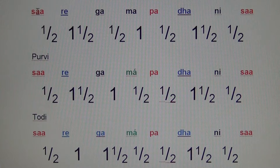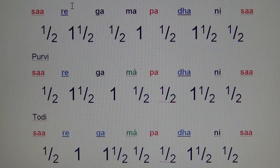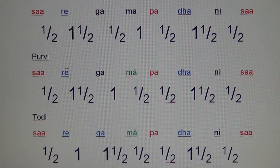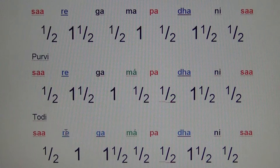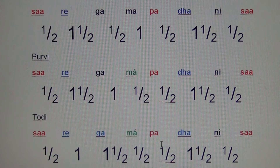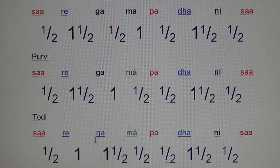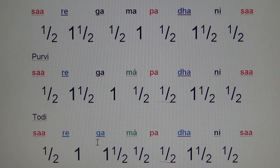What changes: in Bhairav we have re flattened or komal. In Purvi we have re komal as well as ma sharpened. And in Todi we have re komal, ma tivra, and now we have added ga komal or lowered.